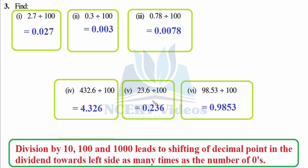Third: find 2.7 divided by 100, 0.3 divided by 100, 0.78 divided by 100. Now we have to divide by 100. Division by 100 leads to shifting of the decimal point — same as the previous question — the only difference is that one additional zero is present here so we shift two digits. For 2.7: write 27 as it is, two digit shift. In all these questions we will shift two digits because we are dividing by 100. Initially we were here, so 1, 2 — answer is 0.027.